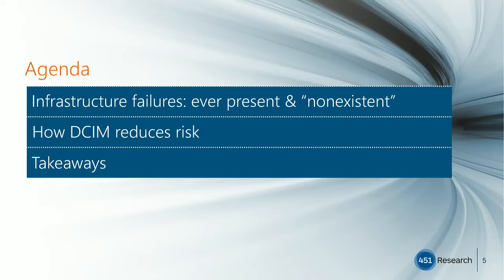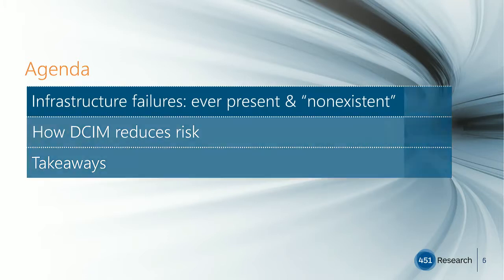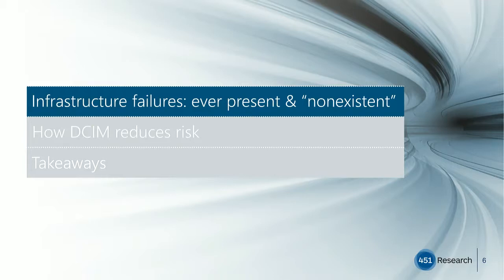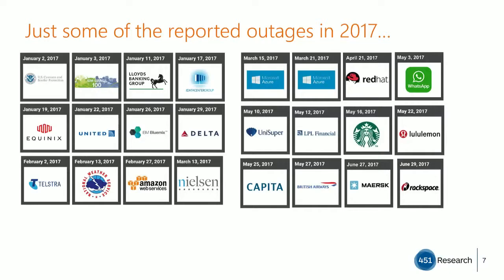Before I get into it, I'd like to begin with a level set on failures in data centers, because unless you're making a point of tracking failures, you might be led to believe that they happen infrequently. Our sister company, the Uptime Institute, has been tracking data center failures amongst its global network of data center operators for more than two decades. I can't share the details of that data because they're often under confidentiality agreements. So instead, we compiled a list of the biggest outages of 2017 — big enough to make the headlines.